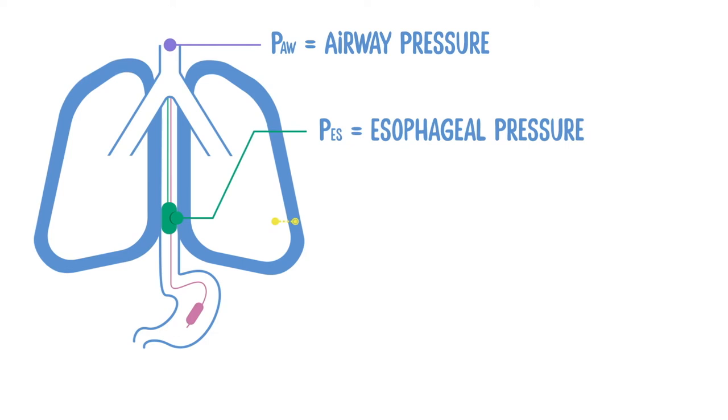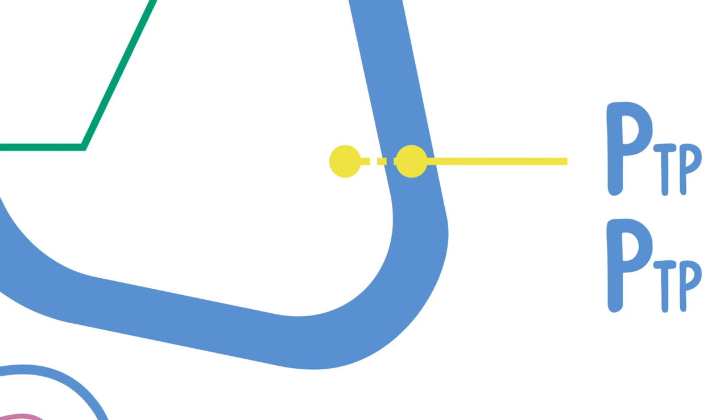With these two parameters we can calculate the transpulmonary driving pressure. This is the driving force for inspiration and thus is responsible for the effectiveness of the pulmonary gas exchange.